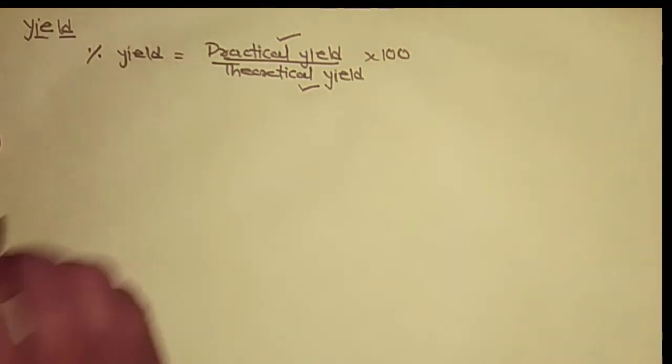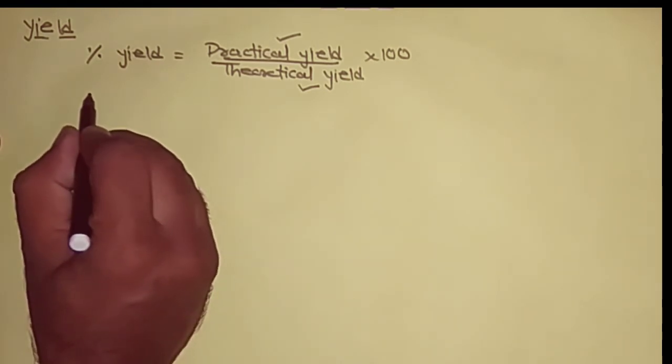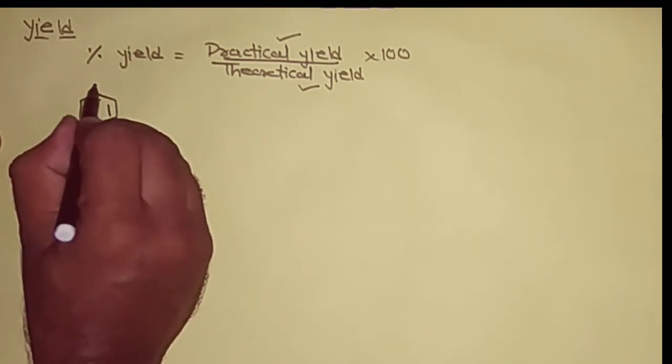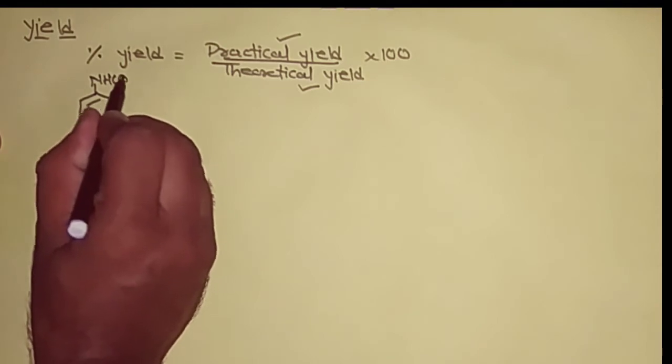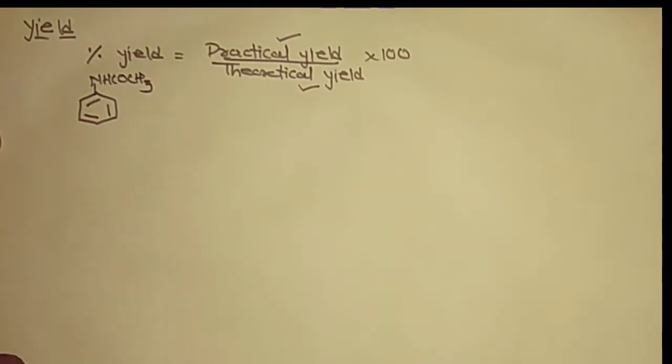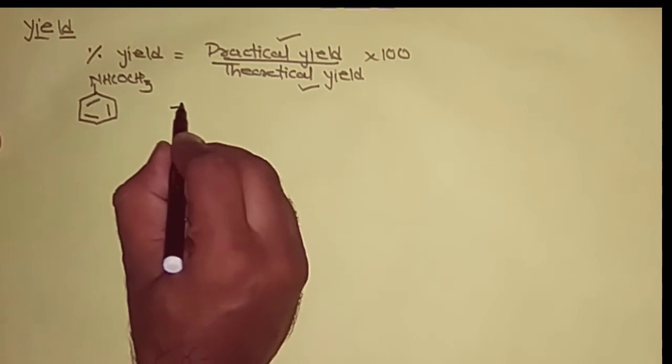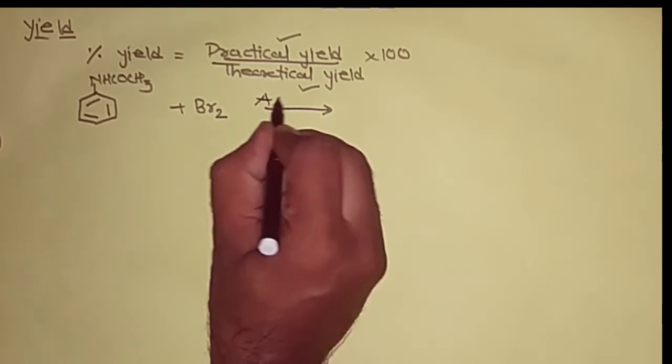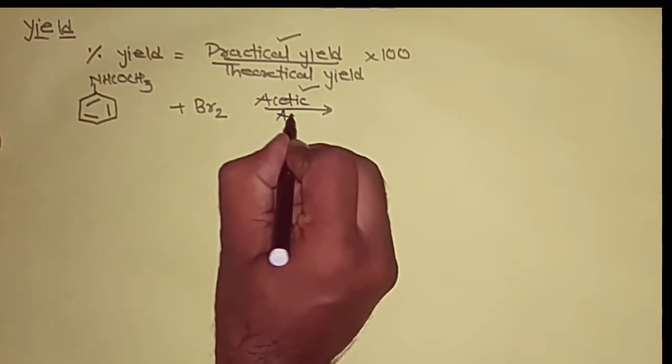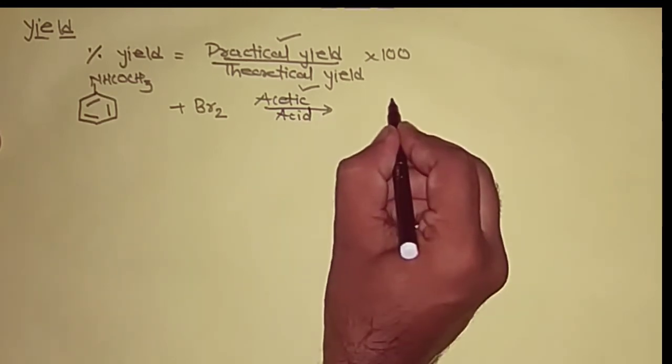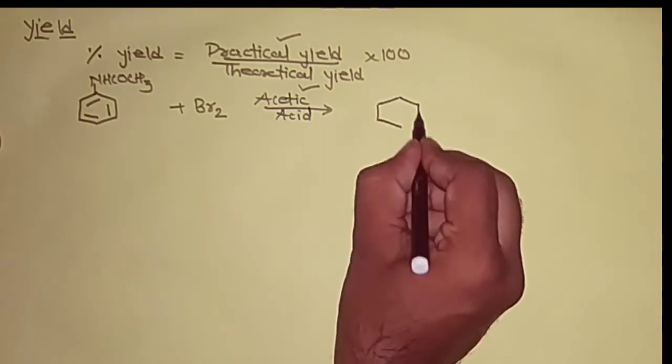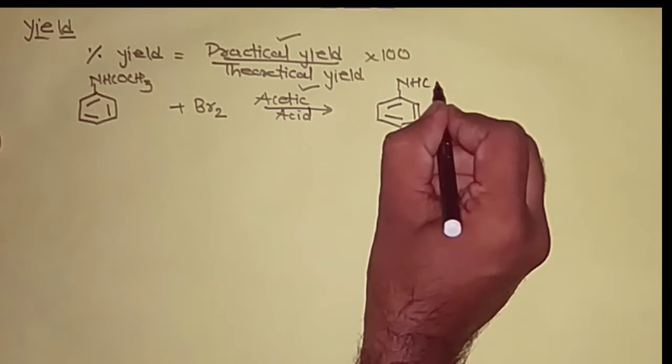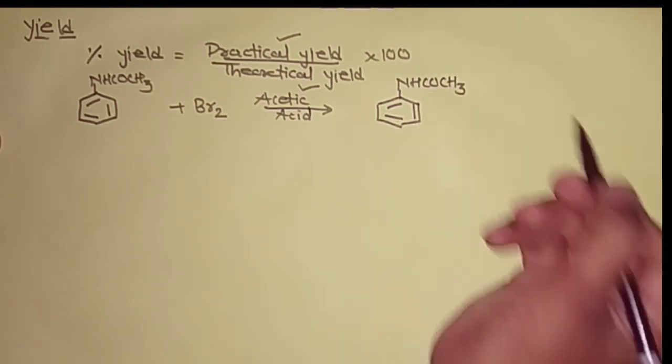In order to understand this in the simplest way, I will consider one simple conversion. Here first I will take acetanilide, that is a benzene ring containing NHCOCH3. Now, this acetanilide when it is treated with bromine (Br2) in presence of acetic acid, it gives us parabromoacetanilide.